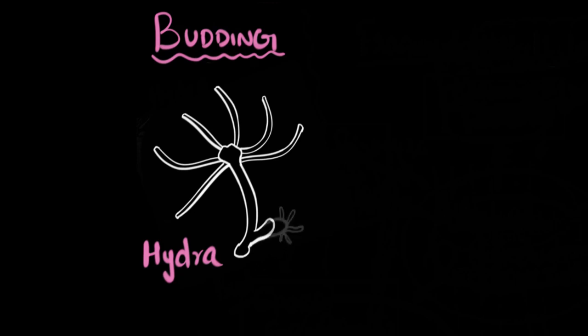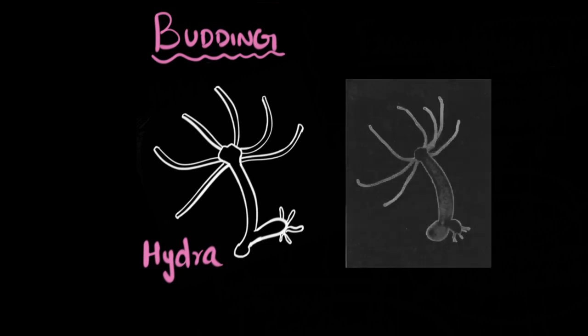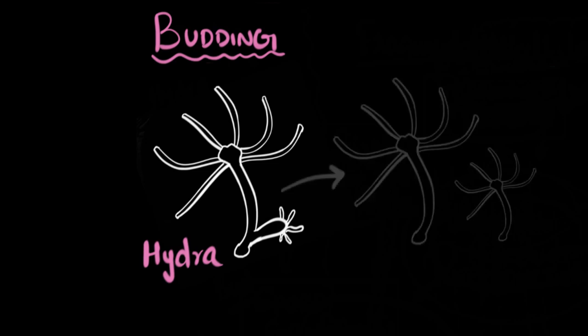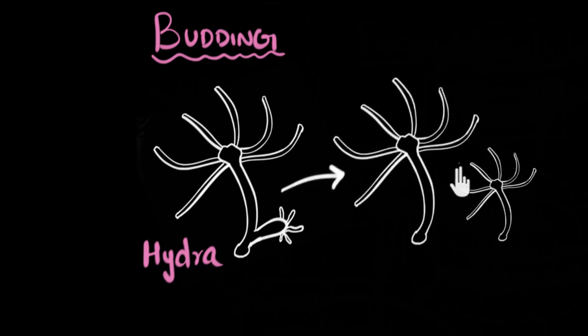This process is called budding. As time passes by, we see that the bud starts growing into a tiny new baby Hydra. Here's an actual picture under microscope. You can see a new baby Hydra growing over here as a bud. Eventually, this keeps on growing and growing. Once it becomes big enough, it gets detached from the parent body. Finally, we now have a brand new Hydra. So this is how budding happens.